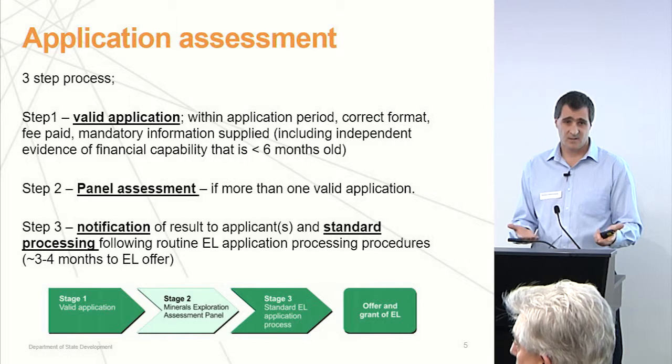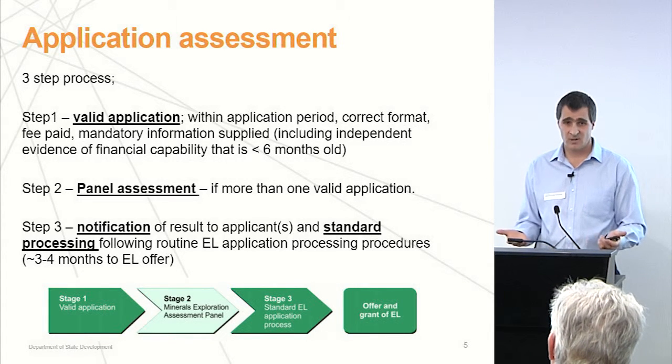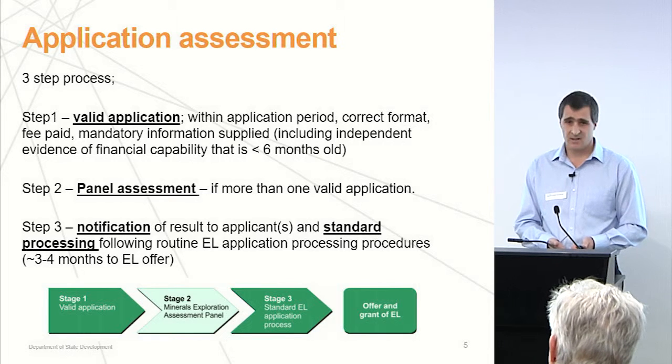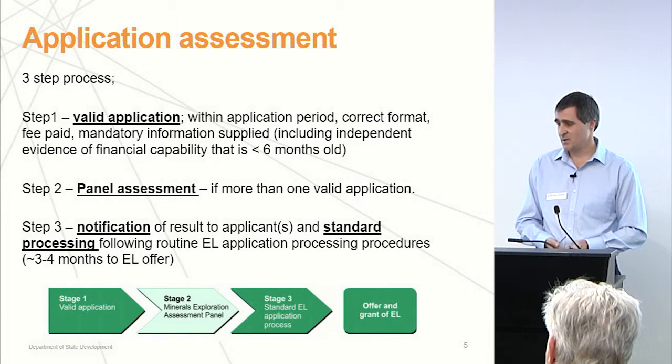Essentially it's a three-step process. If there's more than one application, it will go to a panel assessment where geologists from the Geological Survey and from our regulatory area will independently assess the applications, then come together to make a final recommendation. If it's a single application, it just goes into our normal ELA process. If there are no applications, it will go to vacant land. Once we've determined the application is successful, we'll notify you and it goes into our standard ELA processing procedure.